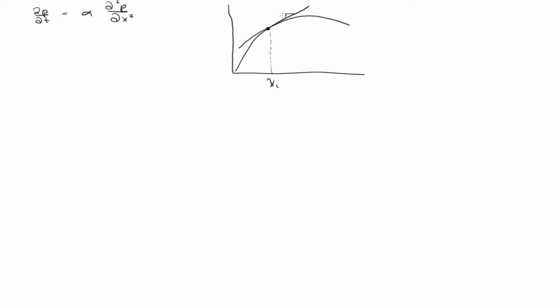The problem is: how many points do you need to define a line? If I ask you what the derivative at a point is, but I don't give you what the function is, what do you do? How many points do you need to define a line? Two. So one way I might do it is if I choose another point that's really close to the first point — call it x_{i+1} — then I can write a line between those two points and compute the slope of that line.